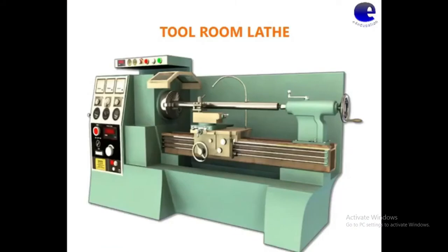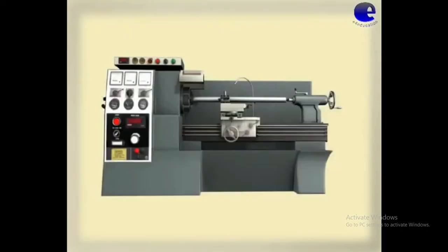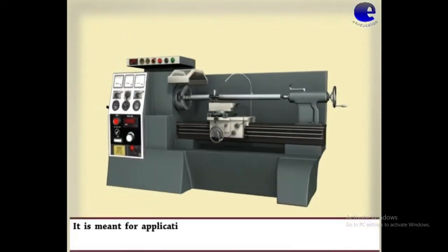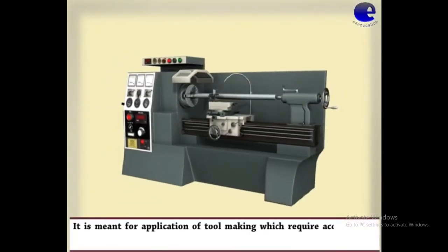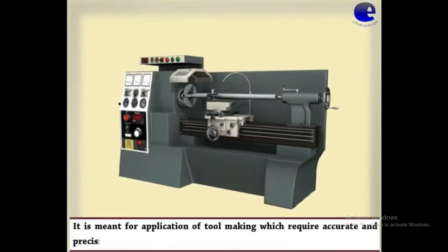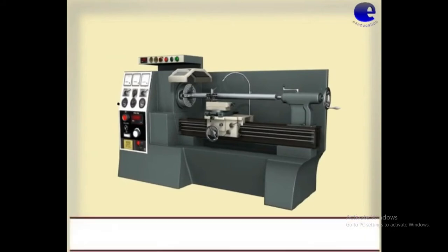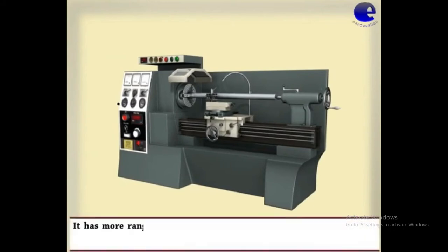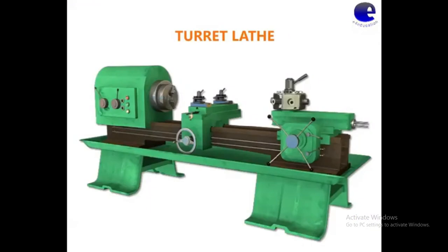Next is the tool room lathe — this is a very big size lathe. It is used for tool making which requires accurate and precision mounting and precision parts. It has a greater range of speed and greater rigidity for turning accuracy. The size is also very big.